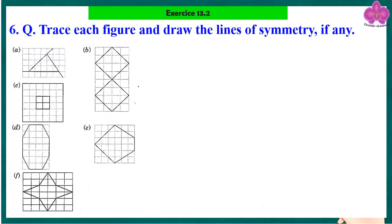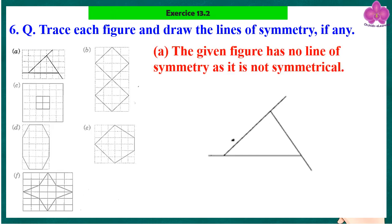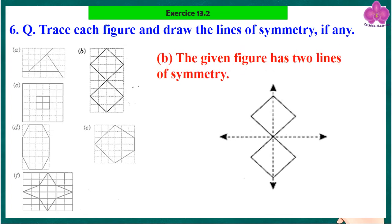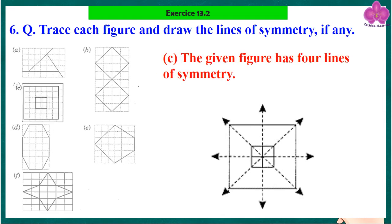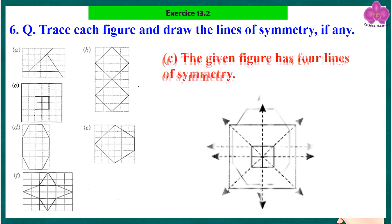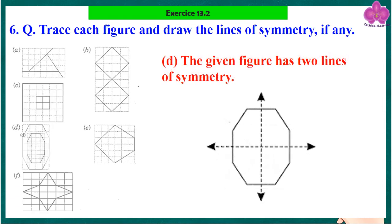Question 6: Trace each figure and draw the lines of symmetry, if any. The first given figure has no line of symmetry as it is not symmetrical. The second given figure has two lines of symmetry. The third given figure has four lines of symmetry. The fourth given figure has two lines of symmetry.